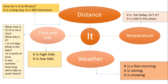'It' is also used to talk about distance, time, tide, temperature, and weather. Examples: 'It is a fine morning', 'It is raining', 'It is snowing', 'It is hot today', 'It is cold in this place.' For distance: 'How far is it to Khulna?' 'It is a long way.' 'It is 300 kilometres.' For time: 'What time is it?' 'It is 10 o'clock.' 'What day is it?' 'It is Friday.' 'What is the date?' 'It is the 10th of June.' 'It was summer.' 'How long will it take to reach there?' 'It will take two hours.' 'It is high tide.' 'It is low tide.'